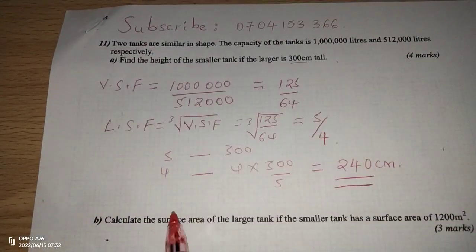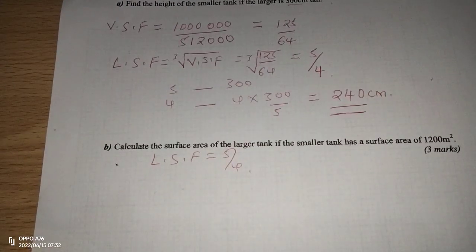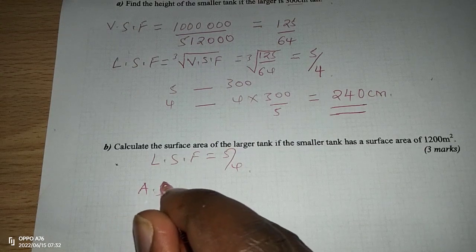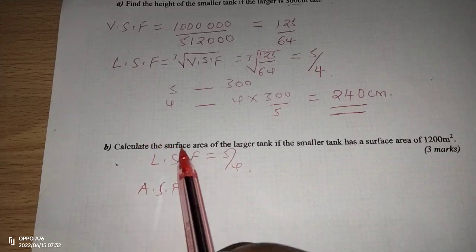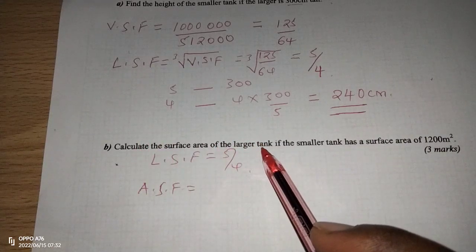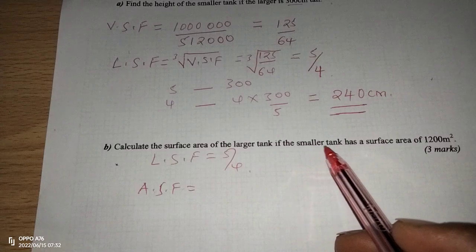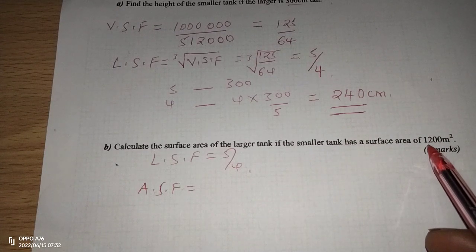We have established that the linear scale factor equals 5 over 4. Now we can find the area scale factor in order to solve Part B, which says: calculate the surface area of the larger tank if the smaller tank has a surface area of 1,200 square meters.